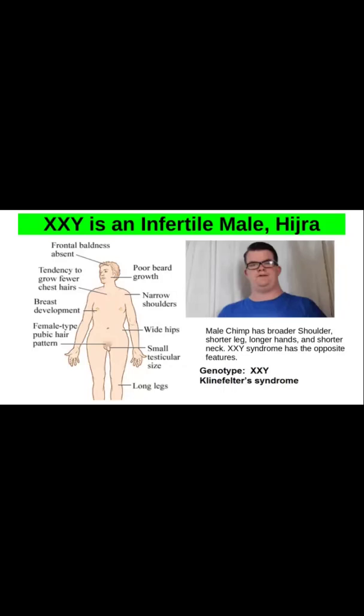XXY is an infertile male. Features of a grown-up XXY person include: tall stature with longer legs, small testicular size, small penis when not erect, breast development of female type, female-type pubic hair, frontal baldness absent, wide hips, narrow shoulders, poor beard growth, and fewer chest hairs.